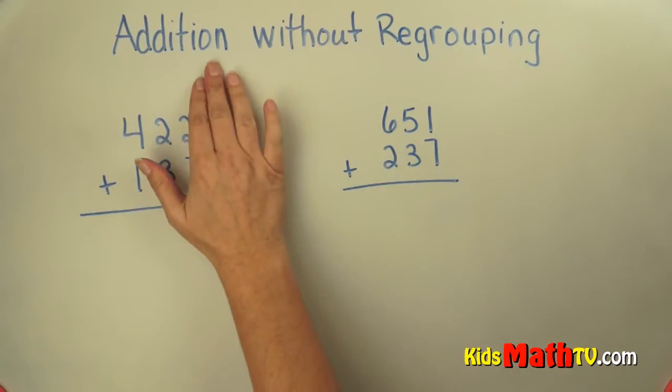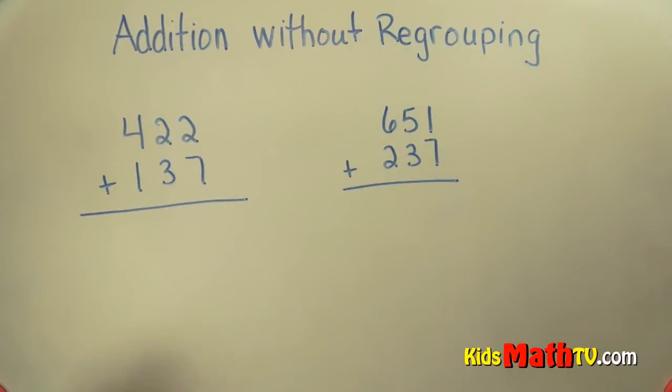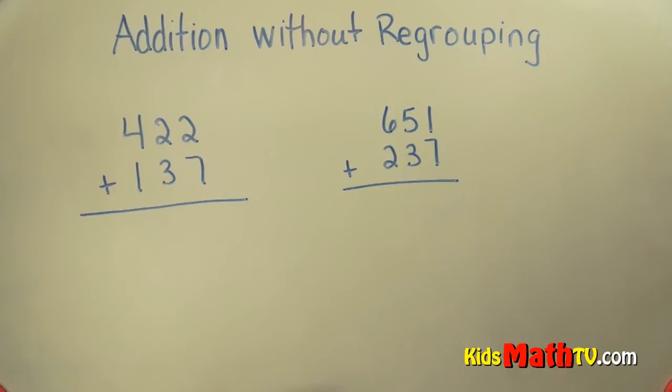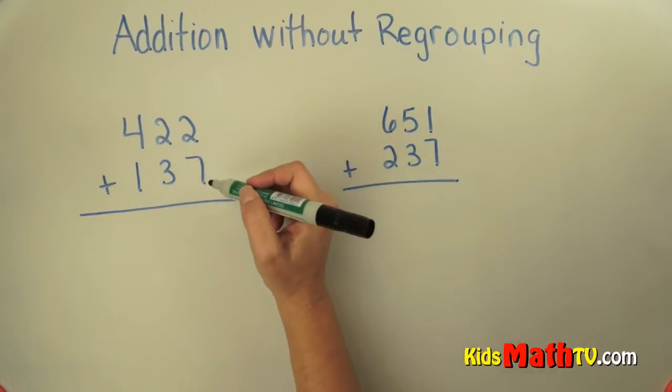In this lesson, you will learn about addition without regrouping. Here we have two problems: 422 plus 137, and 651 plus 237. When we add, we start in the ones column. We're going to add...